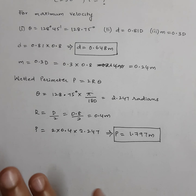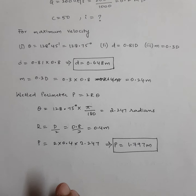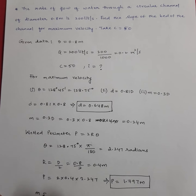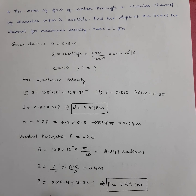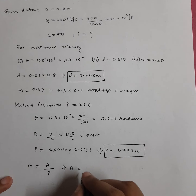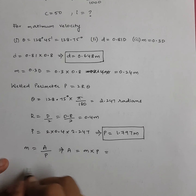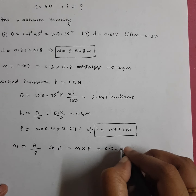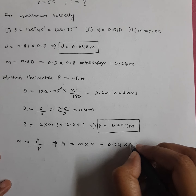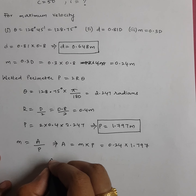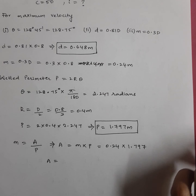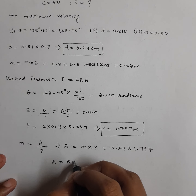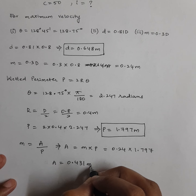Now calculate area using M equals A/P, so A equals M·P equals 0.24 into 1.797 equals 0.431 m². This avoids using the longer formula r²(θ - sin2θ)/2.